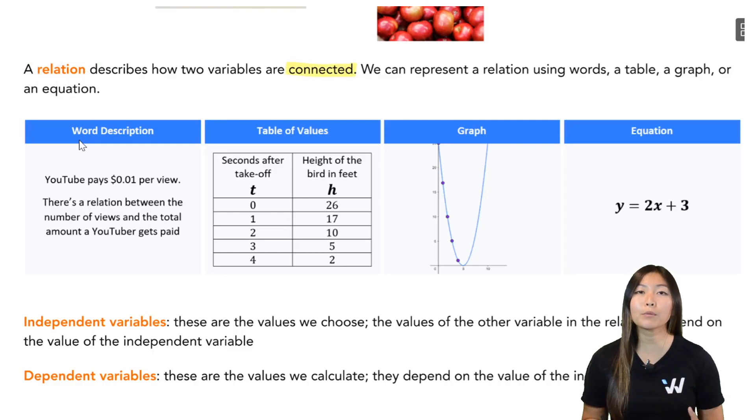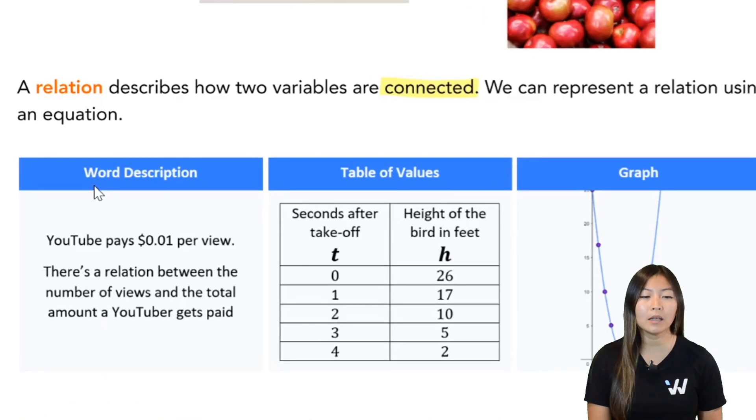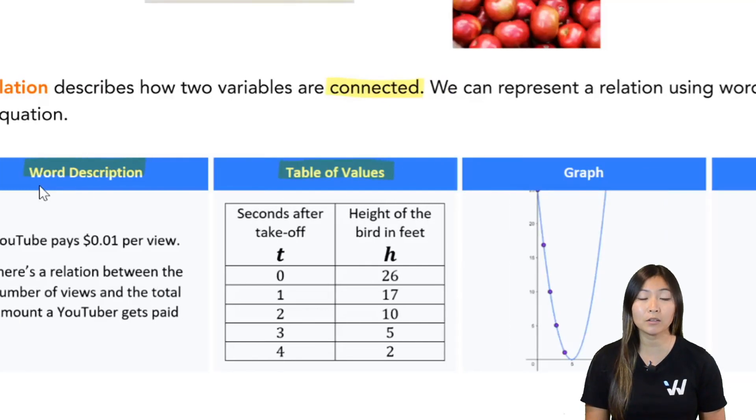So we can represent relations using many different ways. The most common is to use a word description, such as this one, you describe the relationship, you describe the situation, or you can use a table of values. On one side of the table, you're going to have one variable in all of its values. On the other side of the table, you're going to have the other variable in all of those values.